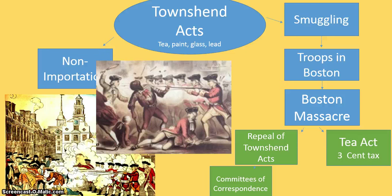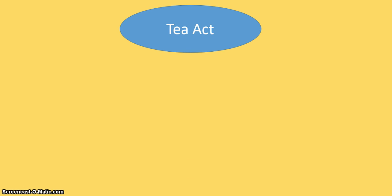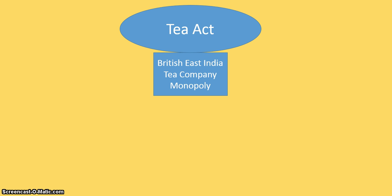Townshend repealed most of the taxes but left a three-pence tax on tea. The Tea Act was actually started to save the British East India Company, which was about to go bankrupt with a surplus of tea no one was buying. The Americans were smuggling in Dutch tea because it was actually better quality and tasted better. So Parliament decided the colonies would only be able to import the East India Company tea, thus creating a monopoly for the British East India Tea Company. This tea was actually cheaper than the Dutch tea they were importing.